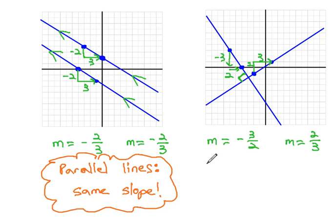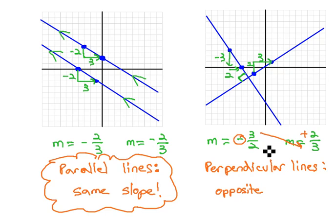This suggests an important property about perpendicular lines. Notice the slope of perpendicular lines. One is negative, and one is positive. They are opposites. Also notice that the slopes are upside down, 3 halves and 2 thirds. They are reciprocals.